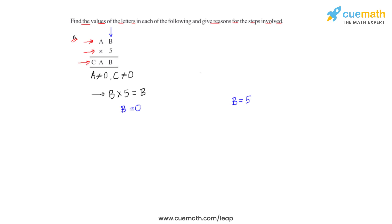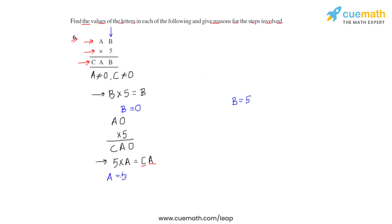Let us take these conditions one by one. For the first condition where b equals zero, we substitute the value of b in the product to get a0 times five, with a result of ca0. Proceeding through this product, five times a gives a number where a is the ones digit and c is the tens digit. This is only possible if a equals five. Substituting both values gives us 50 times five, and the result is 250.